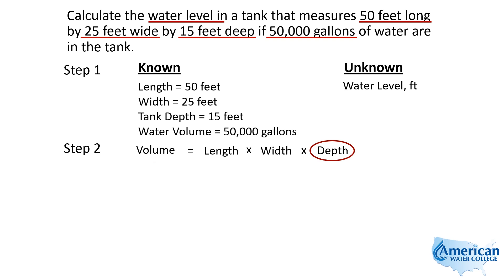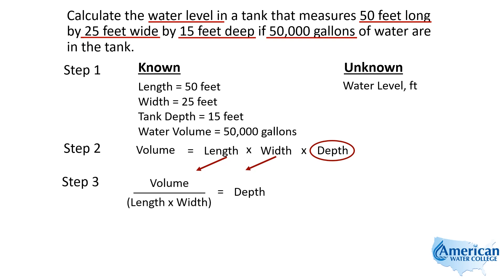Using the five-step approach, we rearrange the formula. We divide both sides by length and width — using what I call the diagonal rule — and move the length and the width to the bottom of the other side. That rearranges the formula to solve for depth. So in Step 3, we take our volume and divide it by the length and the width to get the water depth. But remember, the units must agree, so the 50,000 gallons has to be converted to cubic feet before we plug in the numbers.